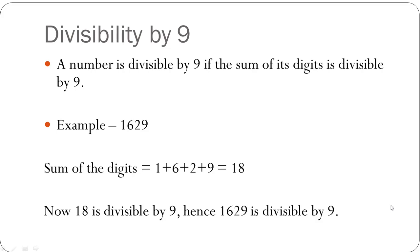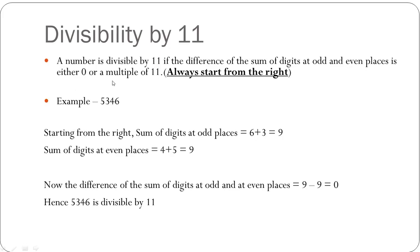Now let's look at divisibility by 11. A number is said to be divisible by 11 if the difference of the sum of the digits at odd and even places is either 0 or a multiple of 11. One thing to remember is to always start from the right.